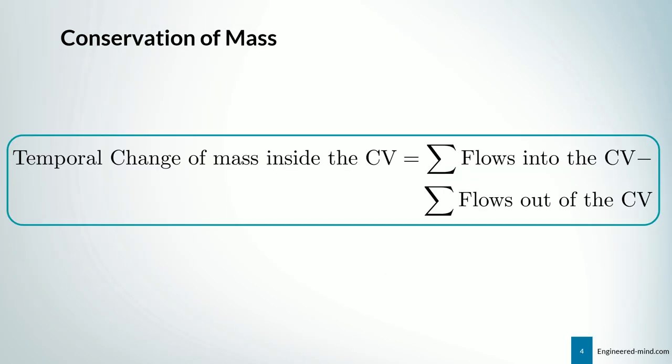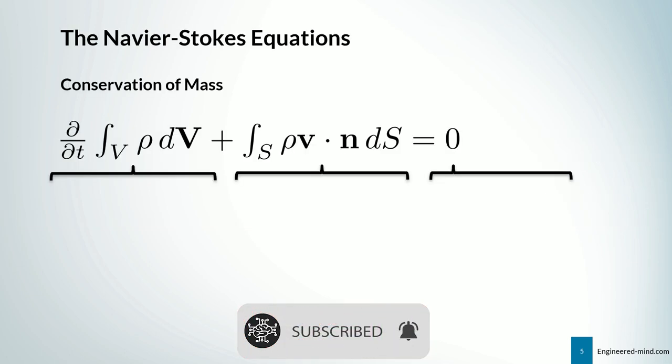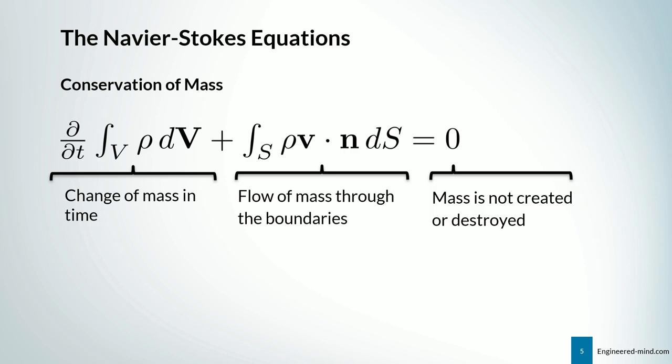Let's recall what the conservation of mass looked like. We said that the temporal change of mass inside the control volume equals the flows into the control volume minus the flows out. What we derived was: the change of mass in time plus the flow of mass through the boundaries equals zero. Mass is not created or destroyed. We also said we can change the surface integral into a volume integral using Gauss's theorem, the so-called divergence theorem.